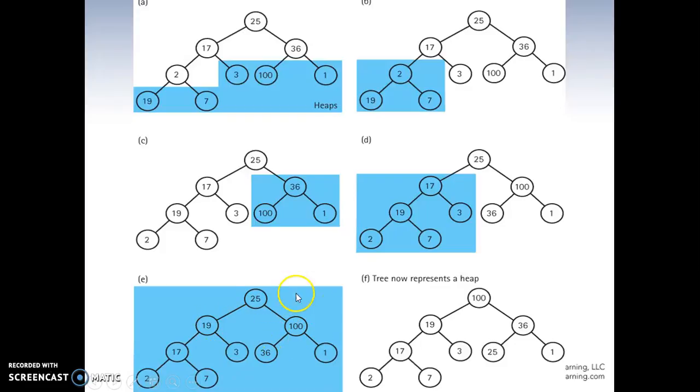And now at the end, we compare the whole. We see 100 has to swap with 25. Now we have to reheap down here. 25 and 36 has to be swapped because having to swap here. So now the tree represents the heap.